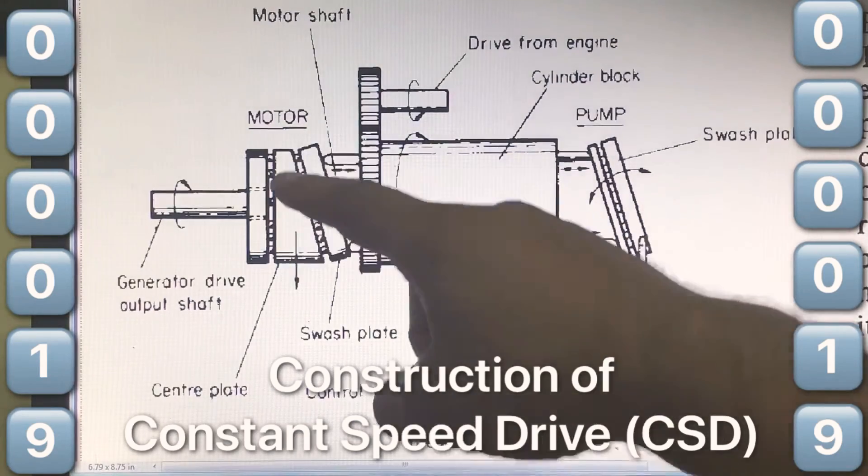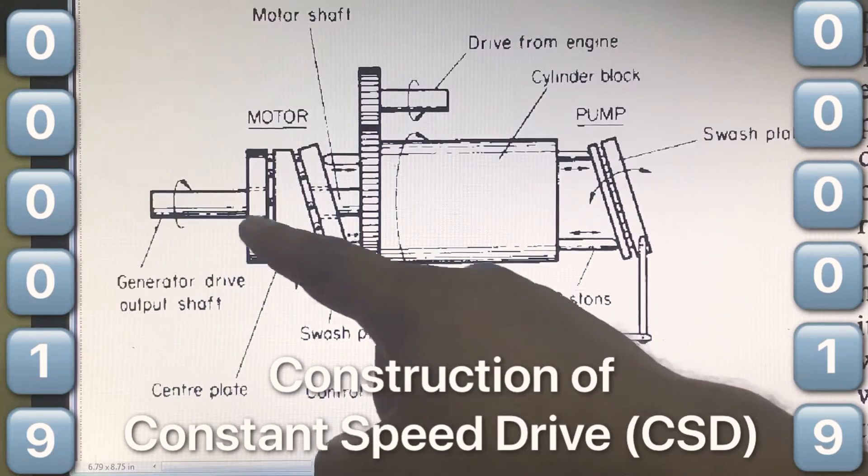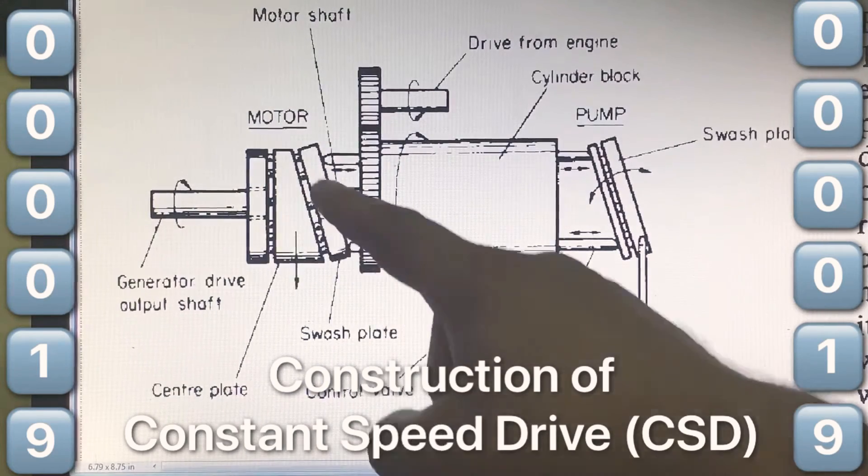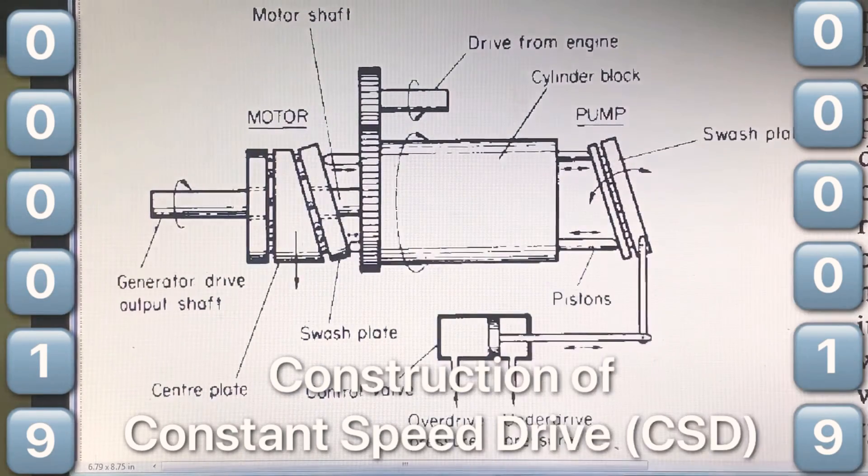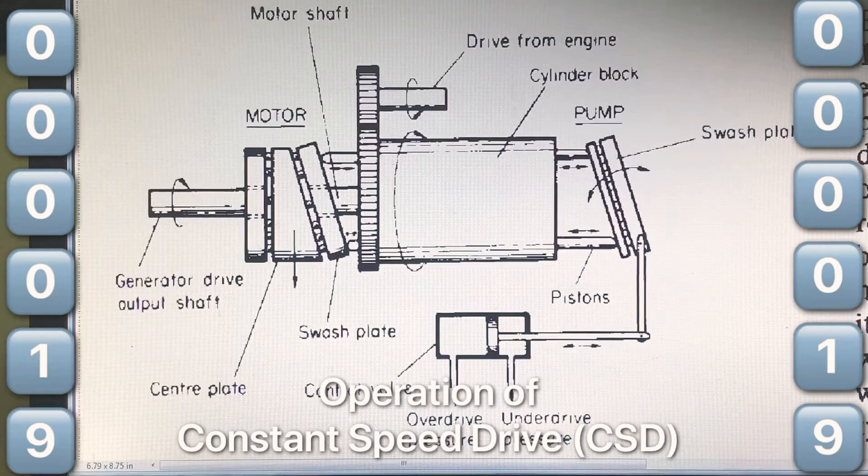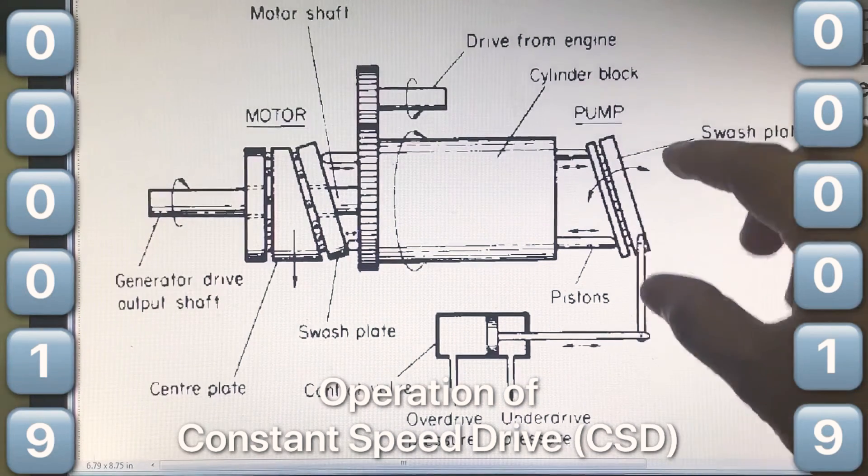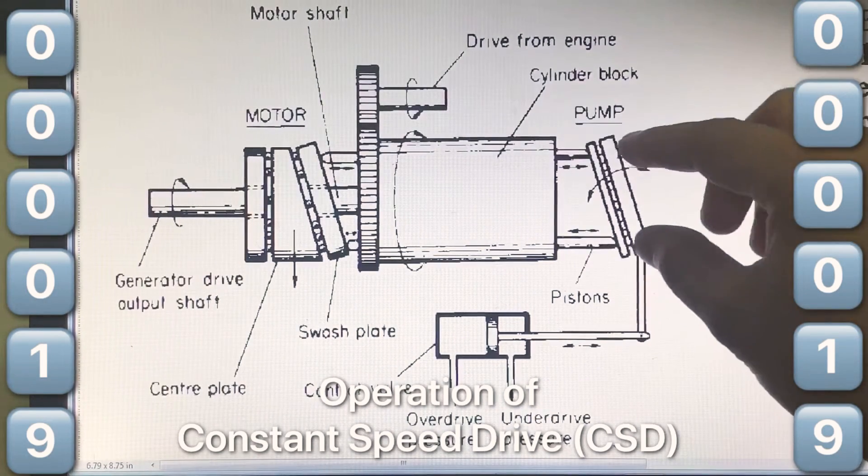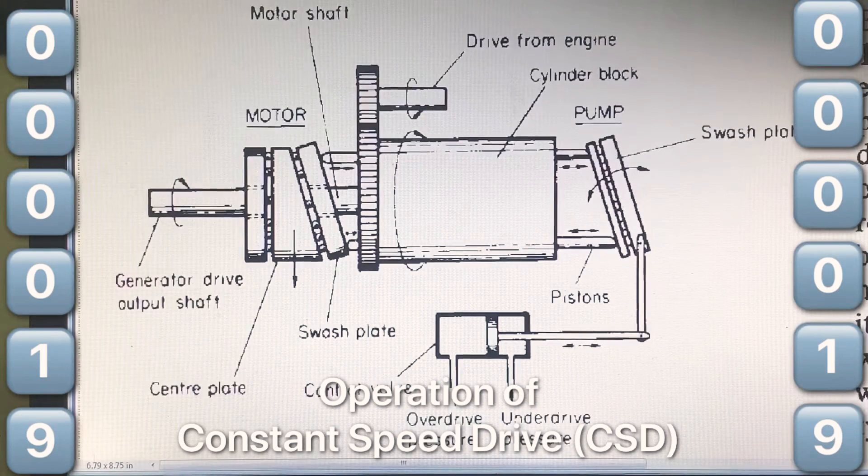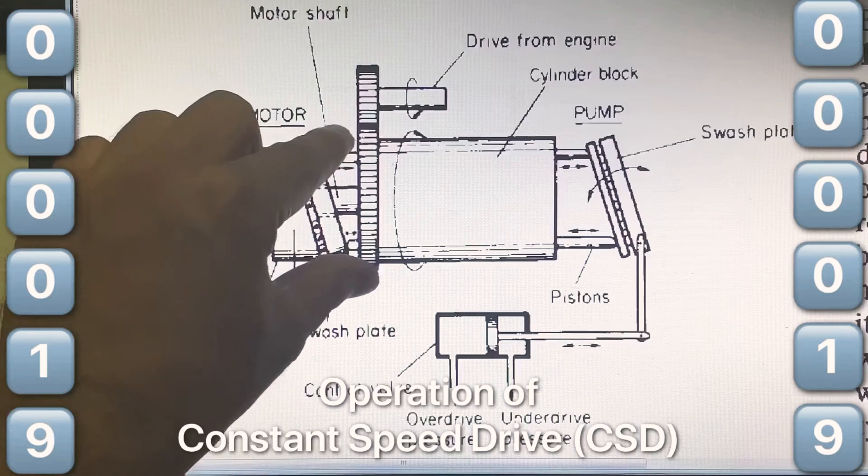This is called as the center plate or eccentric plate. This is in between this plate and this plate. This is a swash plate. The CSD is a hydromechanical variable ratio drive unit which in its basic form has a variable displacement swash plate type of hydraulic pump and a constant displacement swash plate type of hydraulic motor.